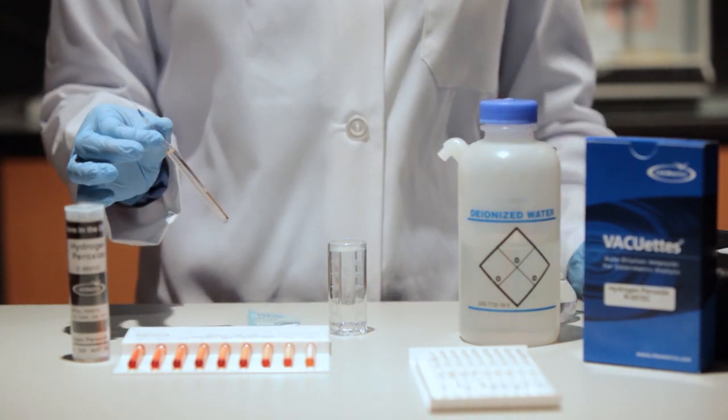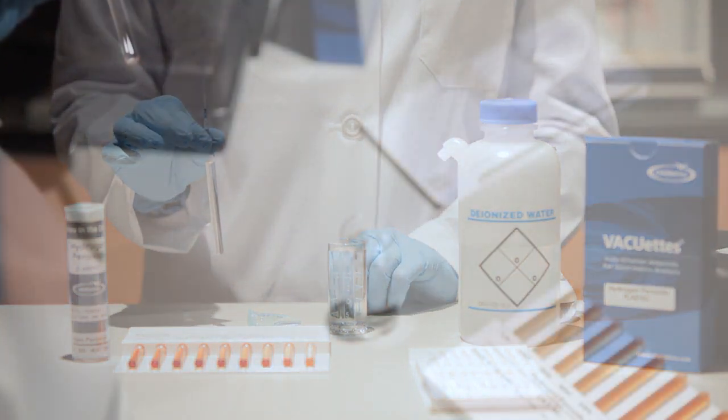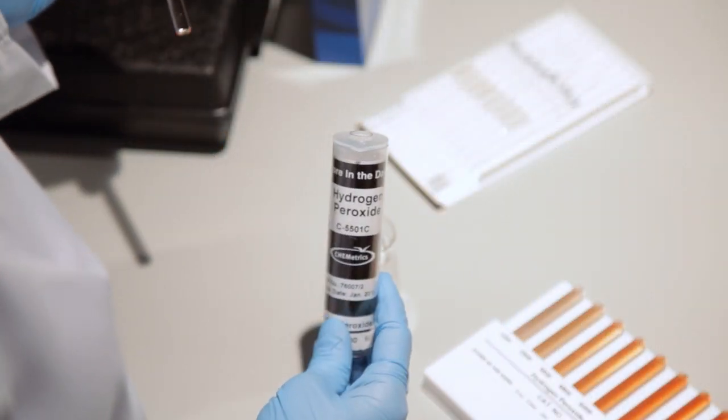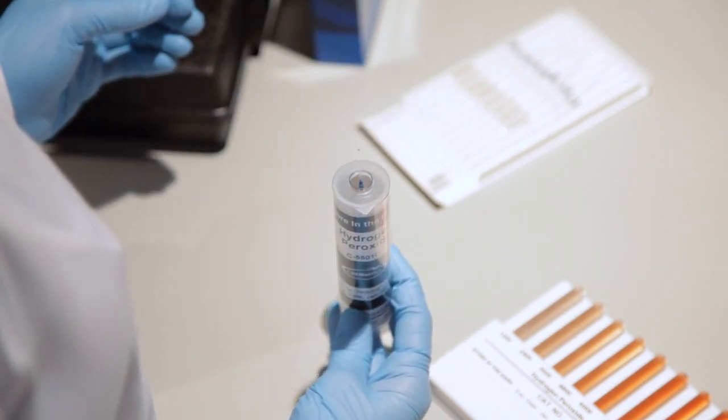The resulting color change can then be compared with the flat or round comparator to quantify results. For lower concentrations, use the round comparator by placing the ampule into the center tube of the comparator.